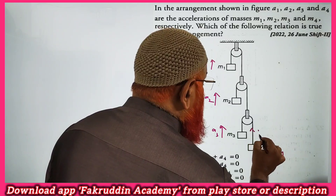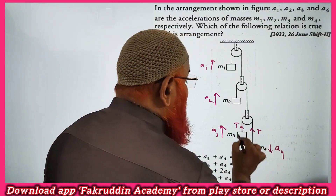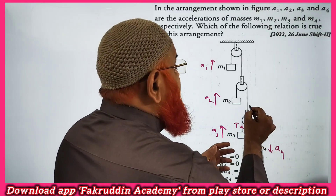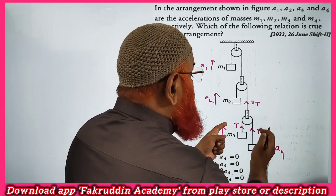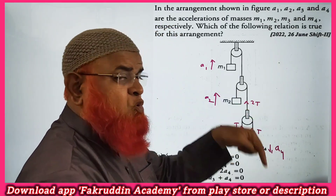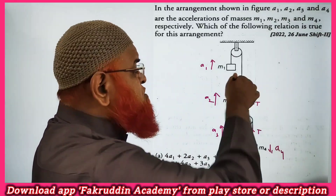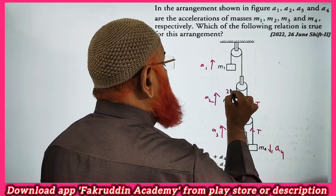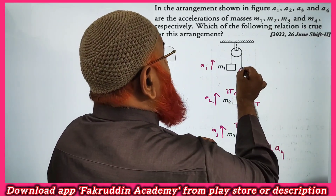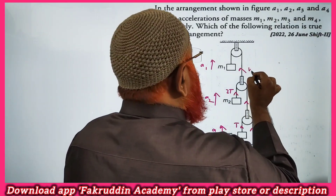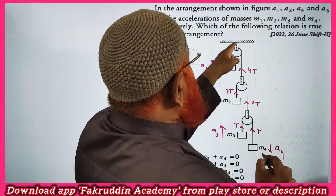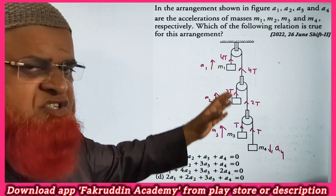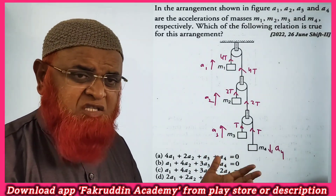Now let us describe the tensions acting on the blocks. This is a tension T and this is also tension T, as this is a single string the tensions are the same. These tensions combined together are applied as 2T, because two strings are replaced by a single string. So the tension is 2T. Here also 2T; these two strings clubbed together form a single string so it is taken as 4T. As this is a single string, this is also taken as 4T.